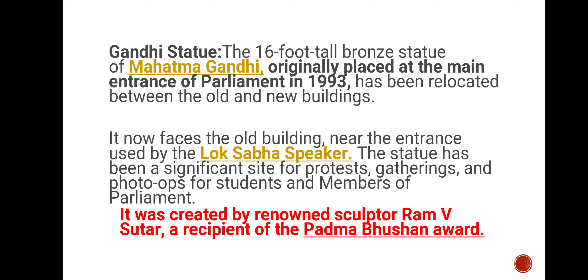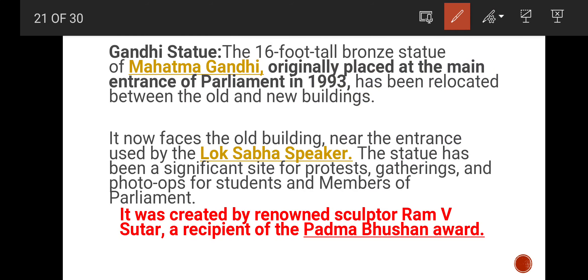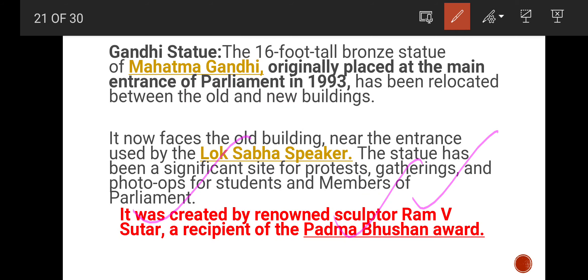A 16-foot-tall bronze statue of Mahatma Gandhi, originally placed at the main entrance of parliament in 1993, has been relocated between the old and new buildings, where it now faces the old building near the entrance. The statue has been a significant site for protesters, gatherings, and photo opportunities. It was created by renowned sculptor Ram V. Sutur, a recipient of the Padma Bhushan Award.